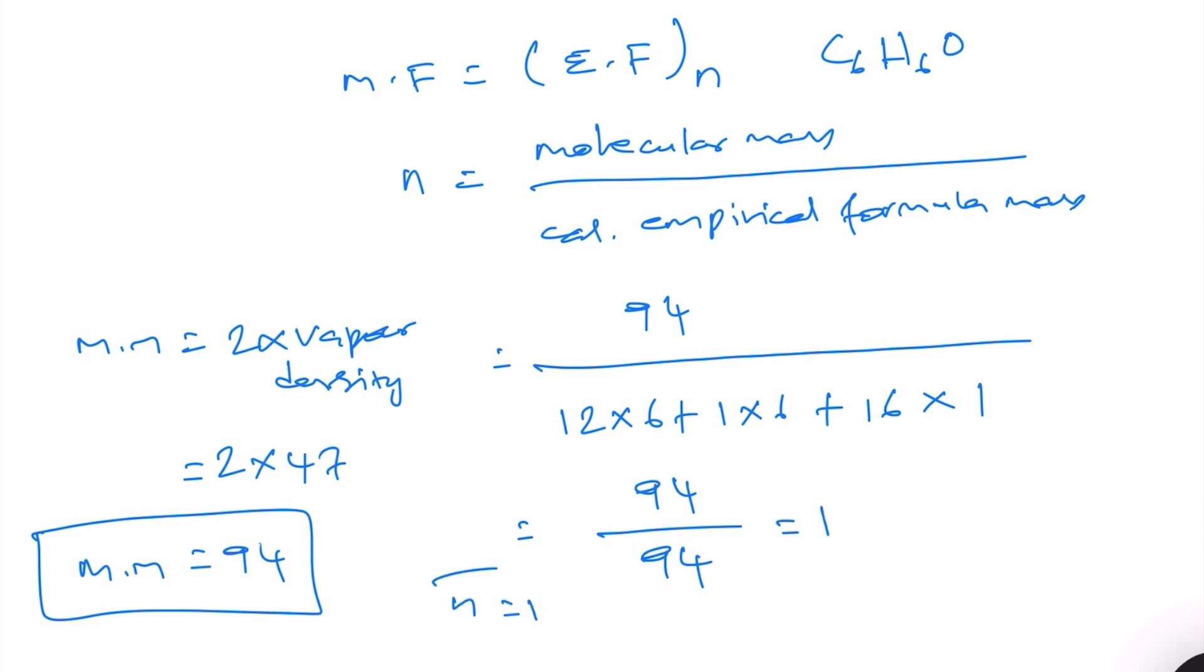So 94 divided by 94, that means 1, the value of n here is 1. And this means that the empirical formula is also equal to C6H6O. What we can write for C6H6O, we can write phenol, is it not? So that will be C6H6O.